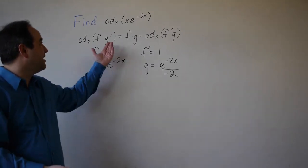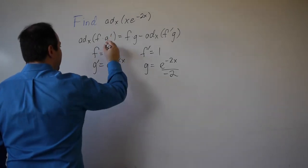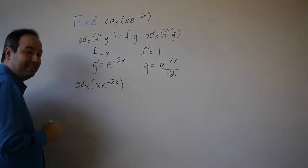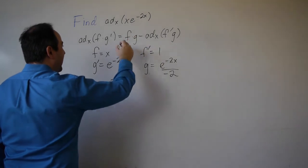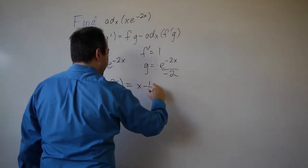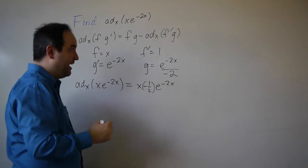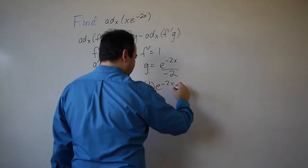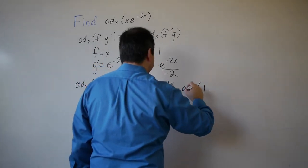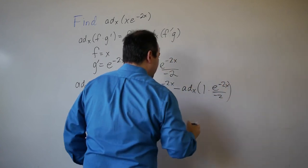The anti-derivative with respect to x of f times g prime — also known as x times e to the negative 2x — is equal to f times g, which is x times negative one-half e to the minus 2x, minus the anti-derivative of f prime times g. So minus the anti-derivative with respect to x of f prime, which is 1, times g, which is e to the negative 2x over negative 2.